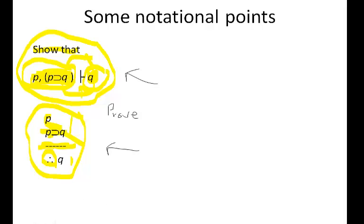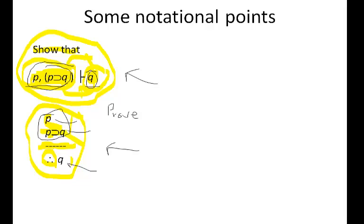A valid argument is one where, if the premises are true, then the conclusion has to be true. Let's explore that 'has to be' a bit. Given everything on the left side of the turnstile, it has to be the case that the right side follows — that it's true. Another way: if you have P and if P then Q, then Q has to be true. So if these two things are true, then this has to be true — that's an if-then relationship.